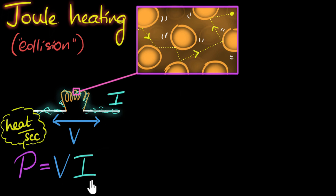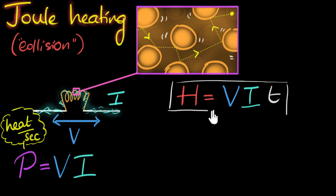In 10 seconds, well, the heat generated will be 10 times this number. And so, in general, we can now write the amount of heat generated will be this number, the amount of heat generated per second, times T. And there we have it.